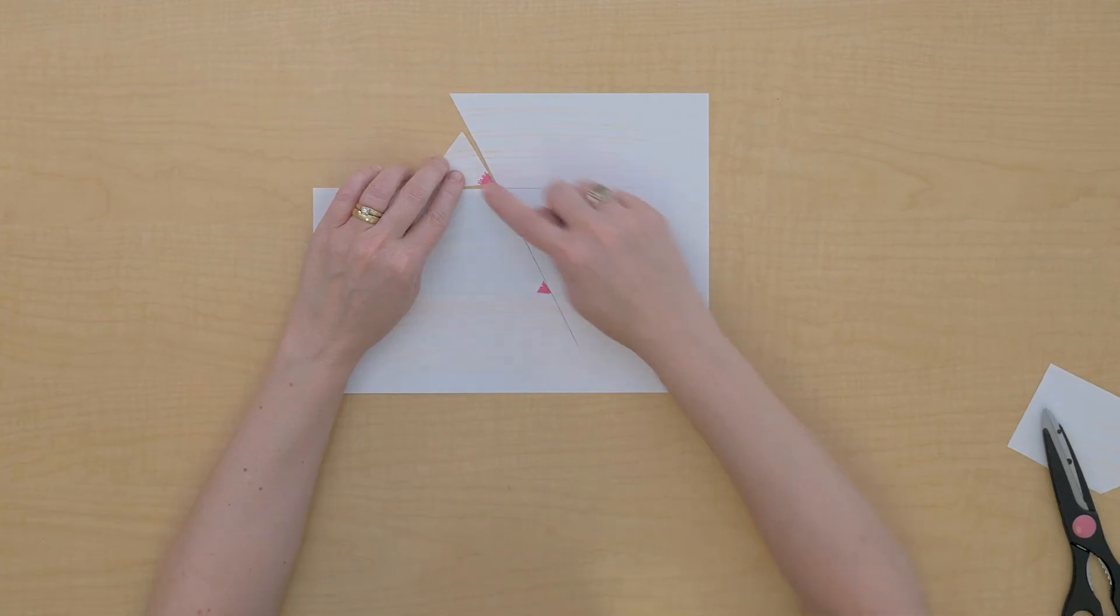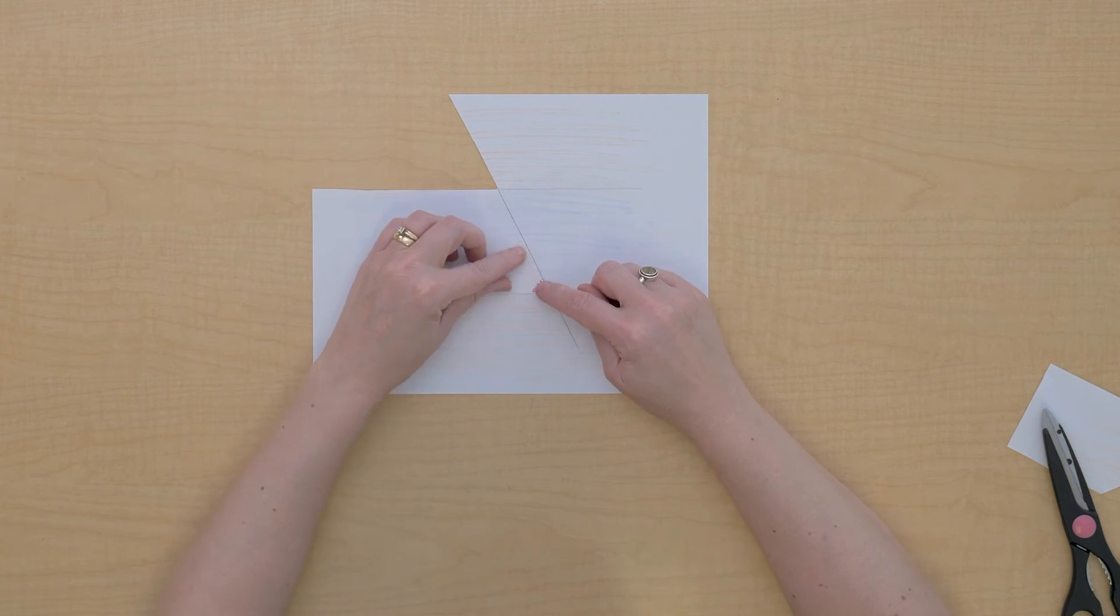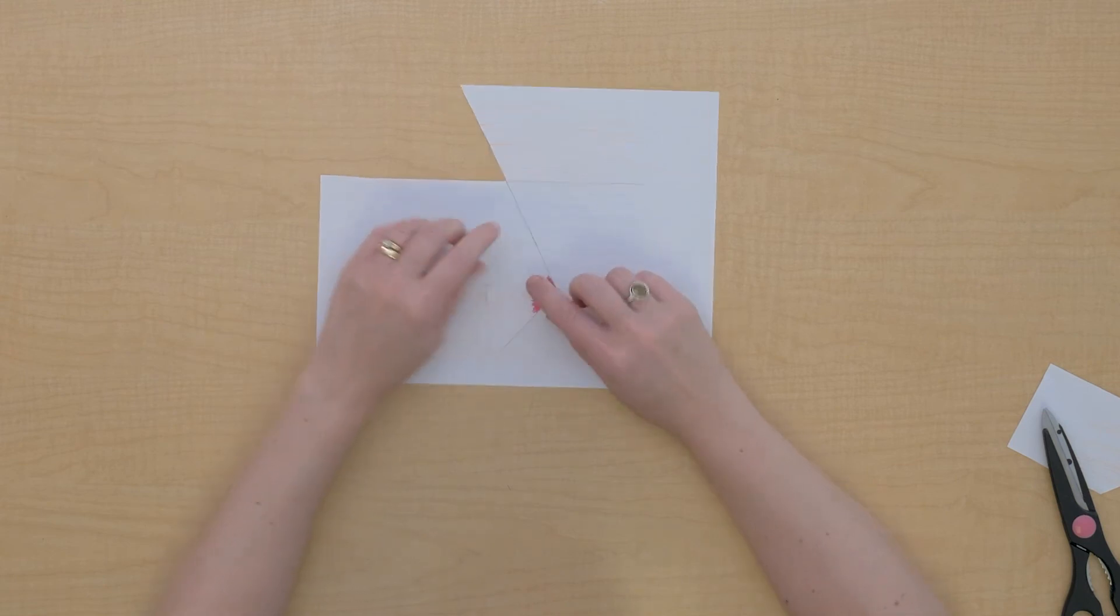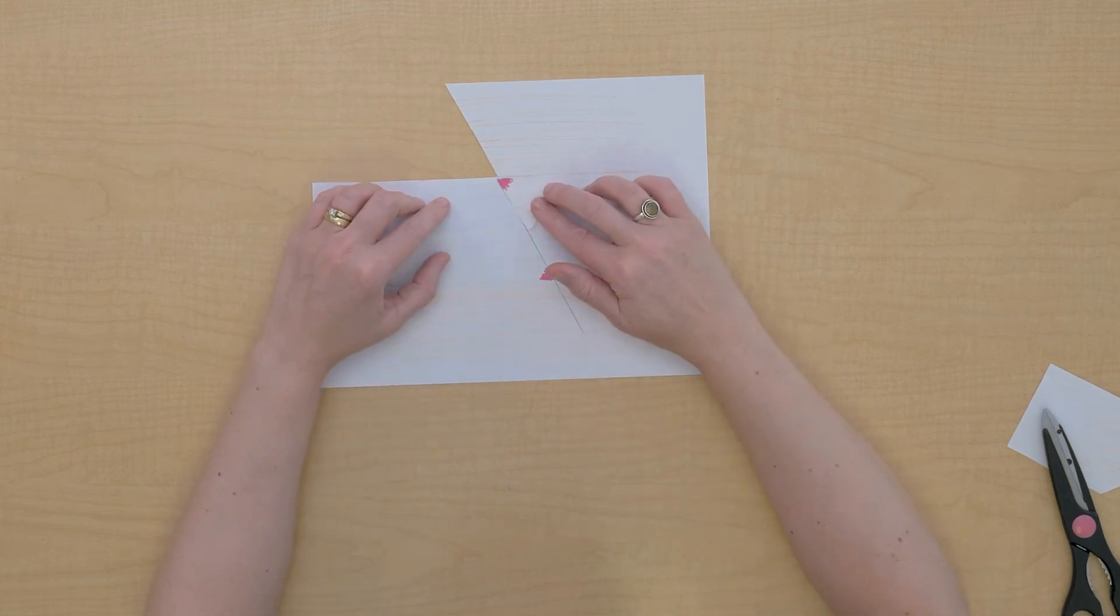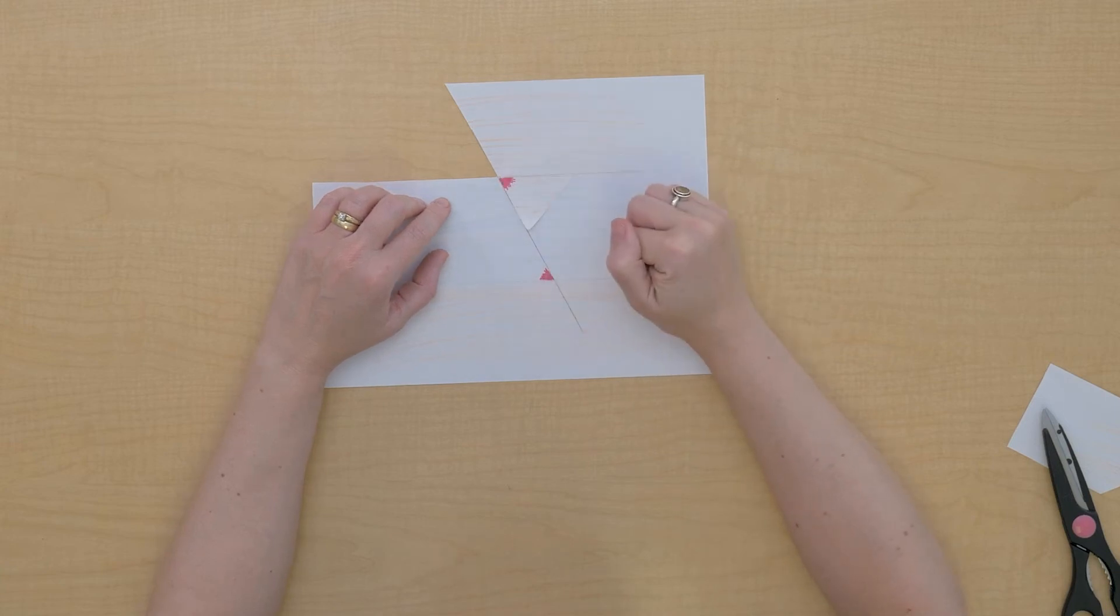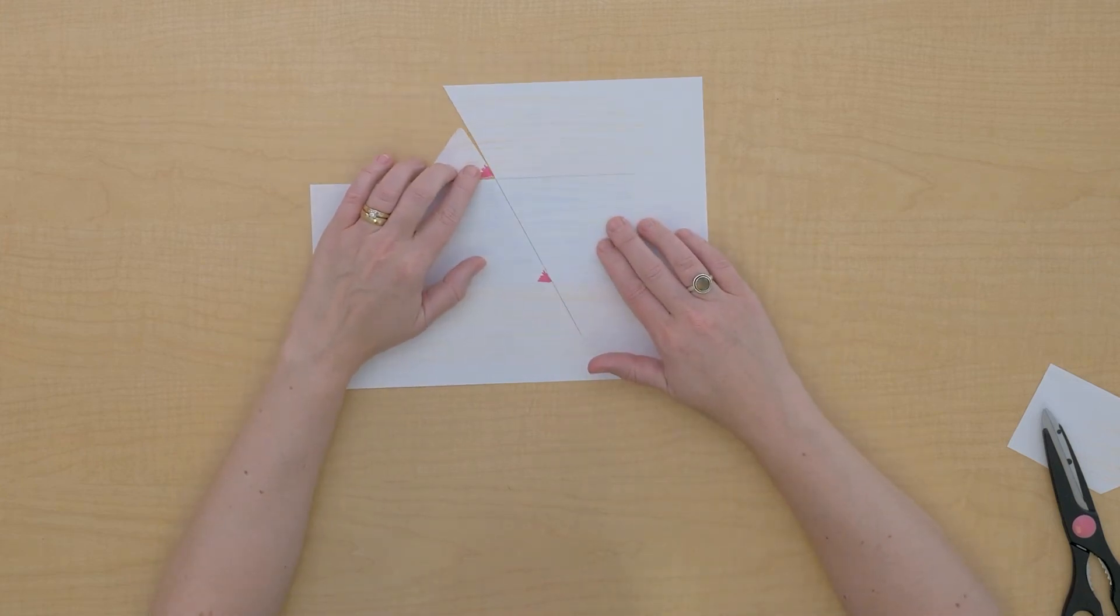Let's take a look at what we found. We found that these corresponding angles are the same. We found that vertical pairs are the same. And I can see that these alternate interior angles are the same. And these alternate exterior angles are the same.